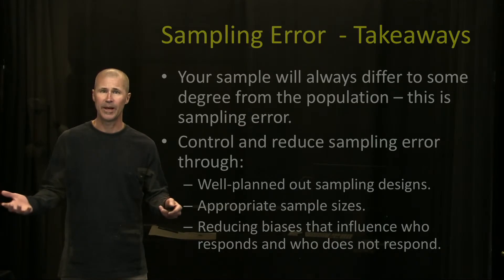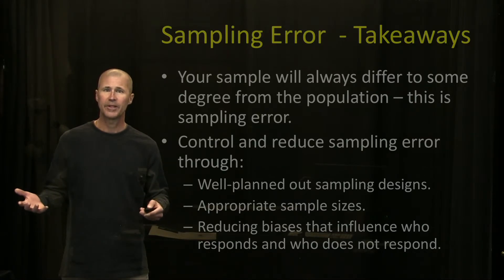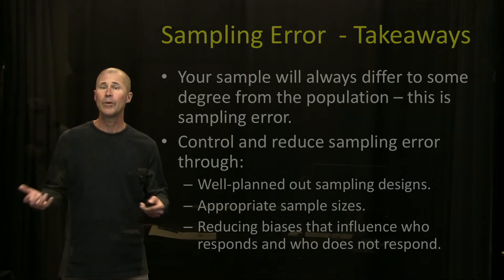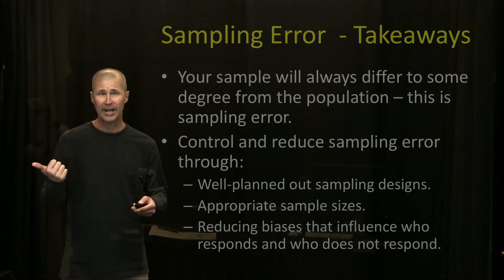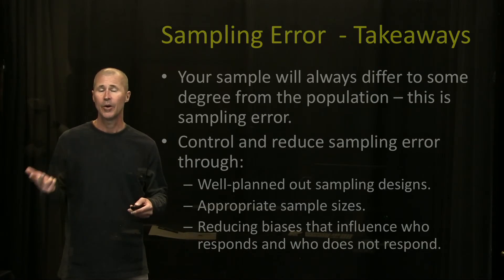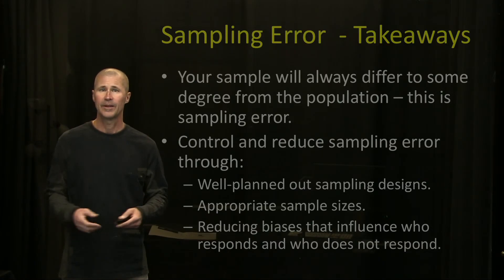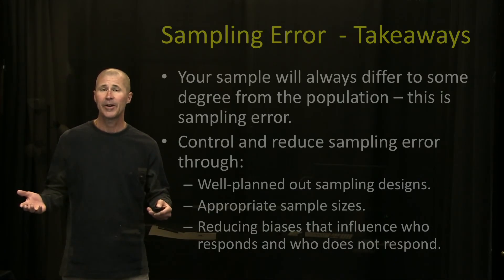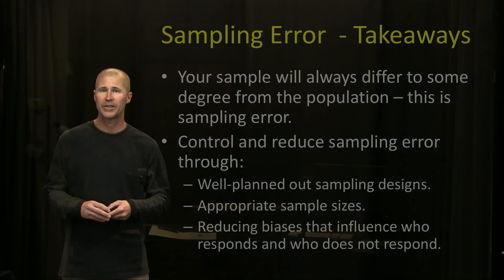So, sampling error — the takeaways. Your sample will always differ to some degree from the population, and this is sampling error. What we want to do as researchers is control and reduce sampling error through well-planned sampling strategies, appropriate sample sizes, and reducing the biases that influence who responds to a survey and who does not. That's sampling error in a nutshell. If you have any other questions, you can always contact us at the University of Montana. Thank you.